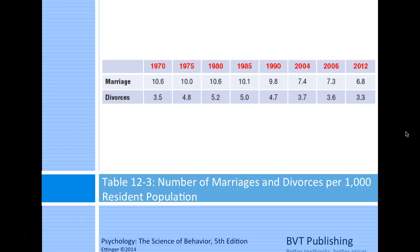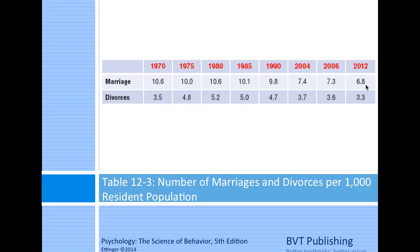Tracking rates of marriages and divorces, there is a steady decrease in marriage and a steady divorce rate—statistically speaking, one out of two marriages ends in divorce.